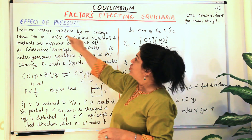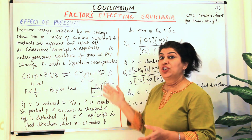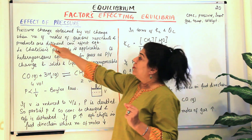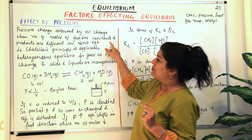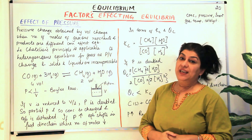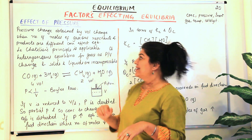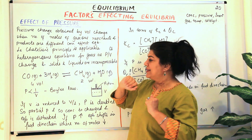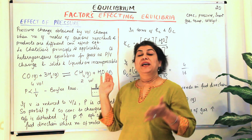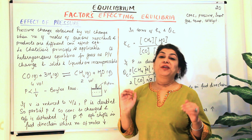Pressure change is obtained by volume change. When the number of moles of gaseous reactants and products are different, only then does it affect the equilibrium. When we change the pressure, the equilibrium will be affected only if the number of gaseous reactants and products are different.